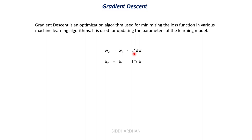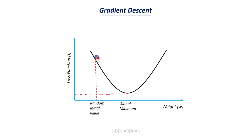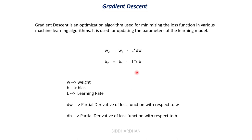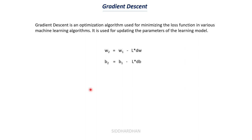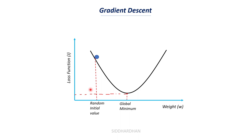The formula is: w2 = w1 − l × dw, where w2 is the updated weight, w1 is the previous weight, l is the learning rate, and dw is the partial derivative of the loss function with respect to w. Similarly, the bias update is: b2 = b1 − l × db. The learning rate is a hyperparameter that dictates how much change we impart to the weight at each step.